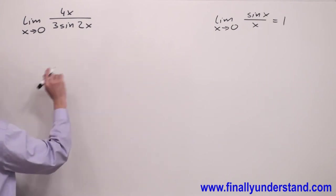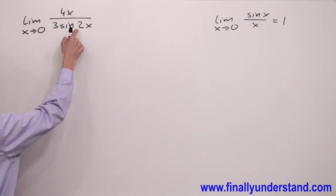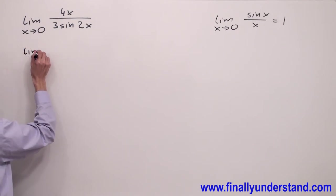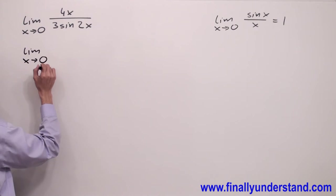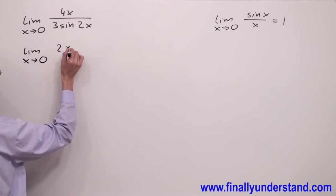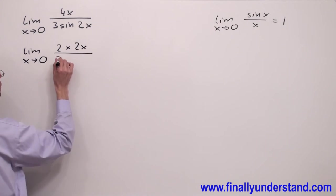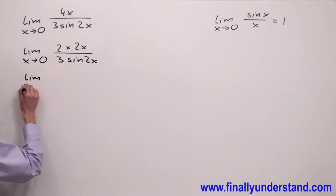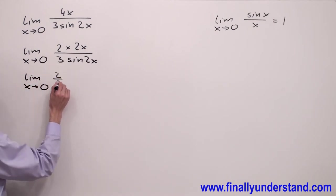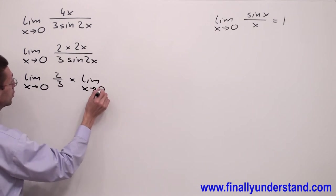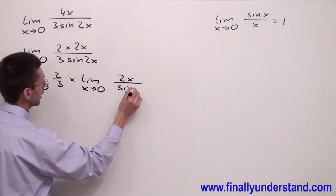In order to use this theorem, we're supposed to organize our problem a little bit. My angle is 2x. That's why I have limit x approaching 0, and I'm going to rewrite 4x as 2 times 2x over 3 sin 2x. I can rewrite this as limit x approaching 0, and I have 2/3 times limit x approaching 0, and I have 2x over sin 2x.